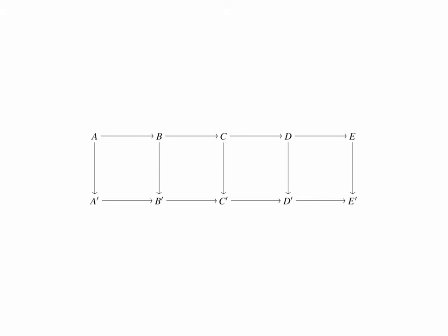The five lemma concerns a diagram comprising 10 abelian groups and 13 group homomorphisms between them. The groups are arranged in two rows of five, and the rows are exact. The top row is exact at B, C and D, and the bottom row is exact at B', C' and D'. We also assume that the four squares of the diagram commute.